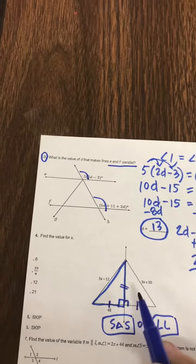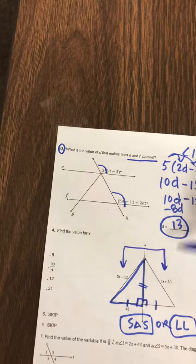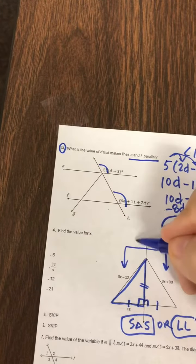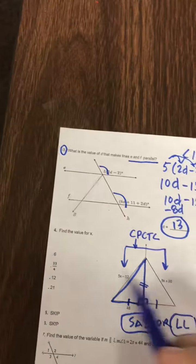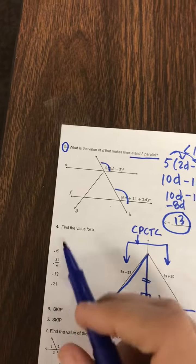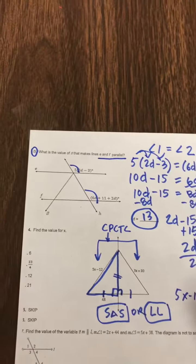We could also call this leg-leg right triangle congruence theorem. So because these are twin triangles, CPCTC tells us that these corresponding parts should be congruent. So that's all the reasons, but all they really want to know is what would X be? So we know these two have to be equal, so we're going to set them equal to each other and solve.